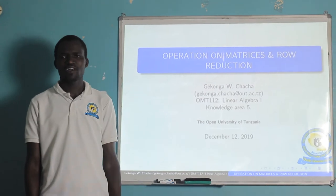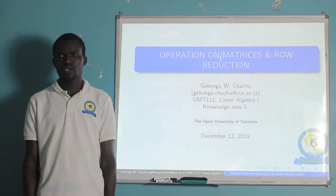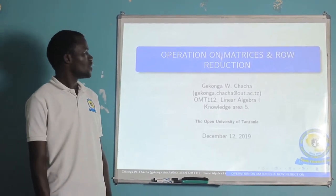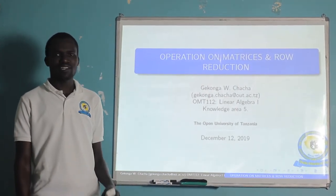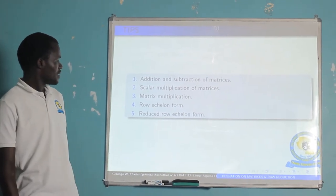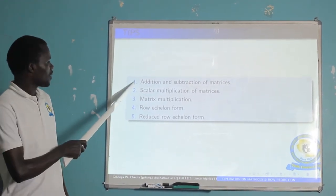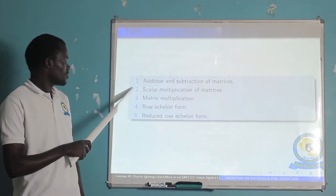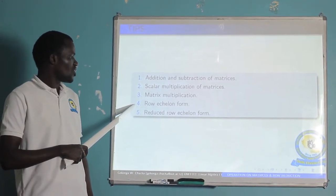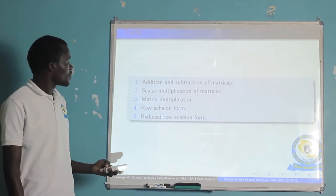Welcome, dear students, to Linear General 1, OMT 112. Today you are going to see Knowledge Area 5. In this Knowledge Area 5, we are going to talk about operations of matrices and row reduction. This knowledge area has been divided into five sub-topics: addition and subtraction of matrices, scalar multiplication of matrices, matrix multiplication, row echelon form, and reduced row echelon form.